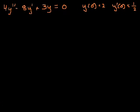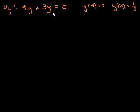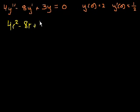I could go into the whole thing — y is equal to e to the rx is a solution, substitute it in, then factor out e to the rx and have the characteristic equation. If you want to see all of that, watch the previous video to see where the characteristic equation comes from. But in this video, I'm just going to show you how quickly you can do these problems mechanically. So the characteristic equation is going to be 4r squared minus 8r plus 3 equals 0. Watch the previous video if you don't know where this comes from.